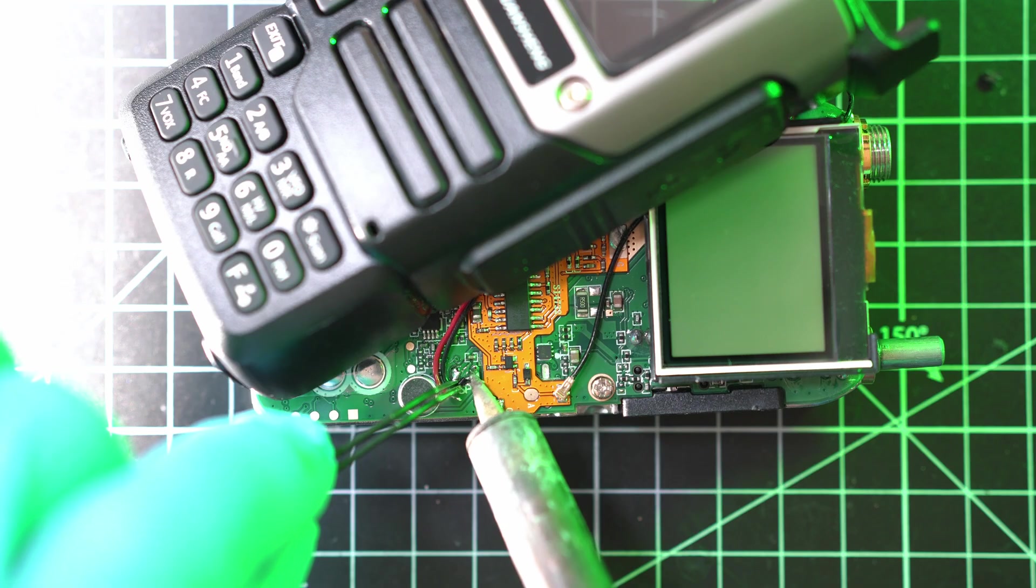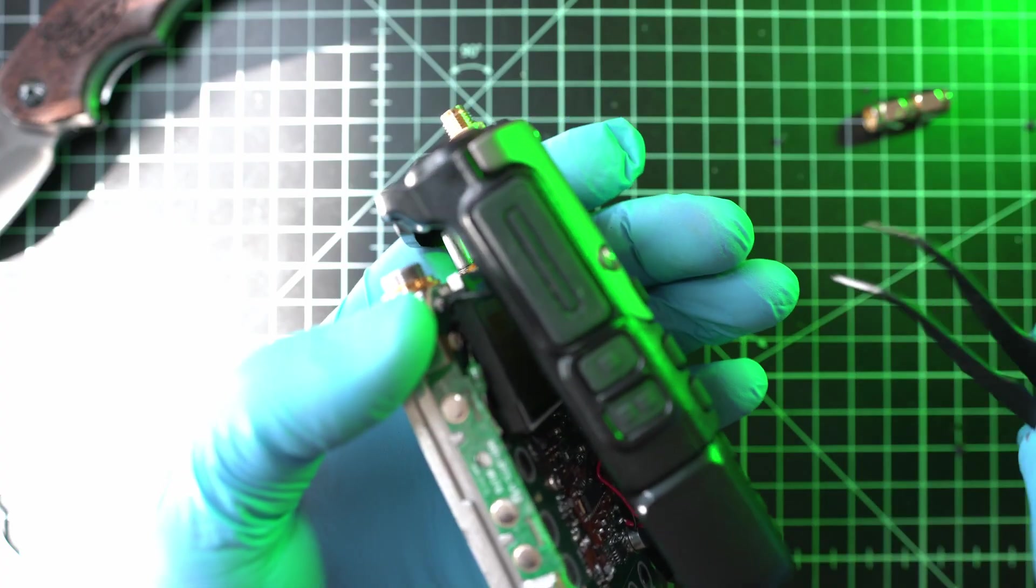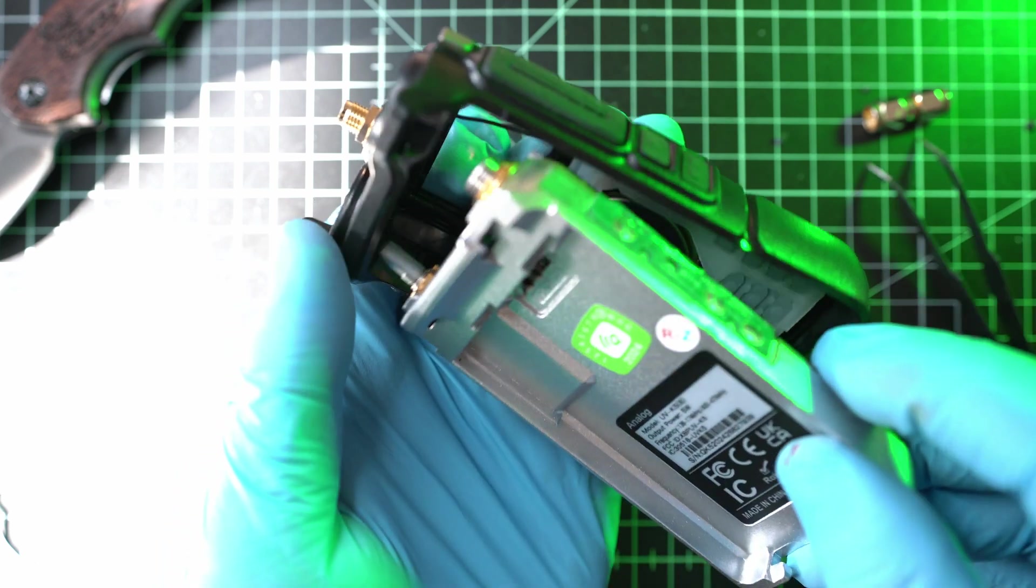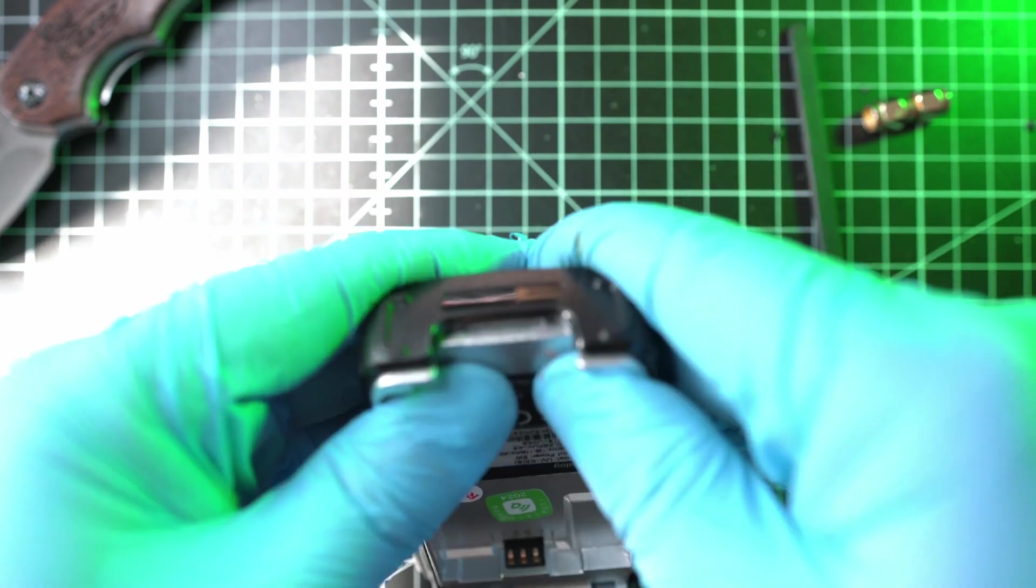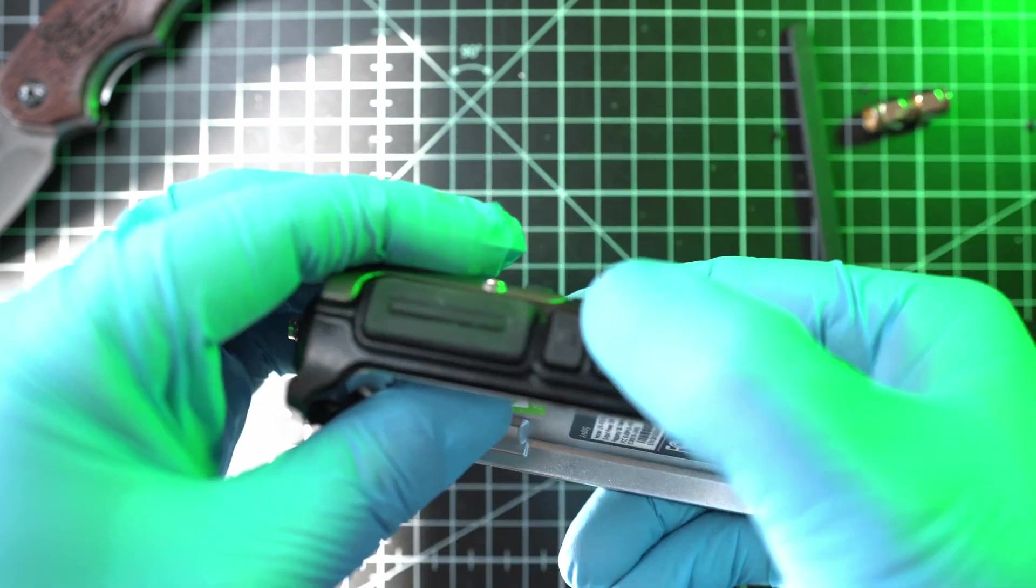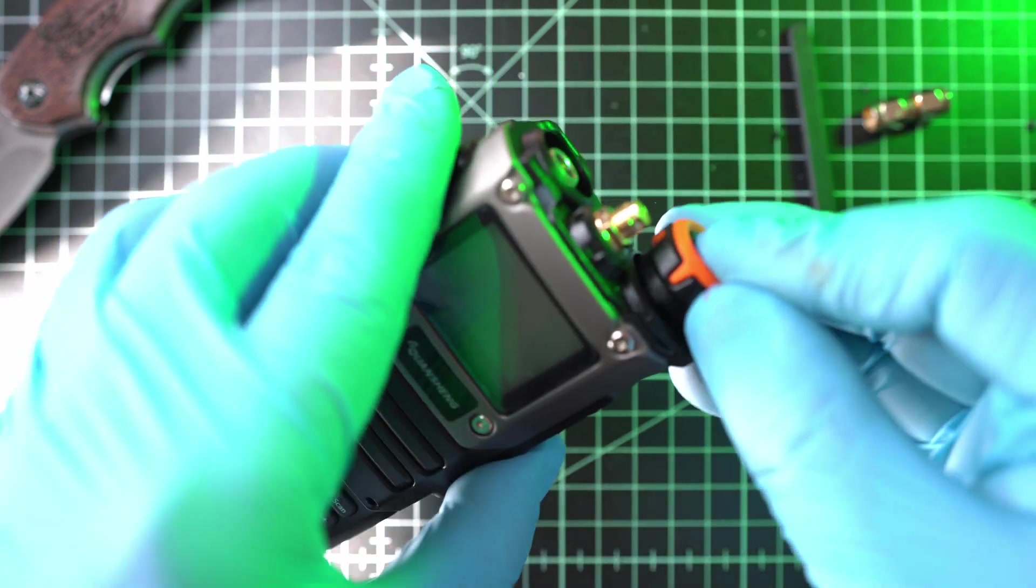Solder on speaker wires and try to close the radio. New RF cable can restrict buttons from clicking, so route it somewhere safe. Click the radio together. Test all buttons and it's time for testing.